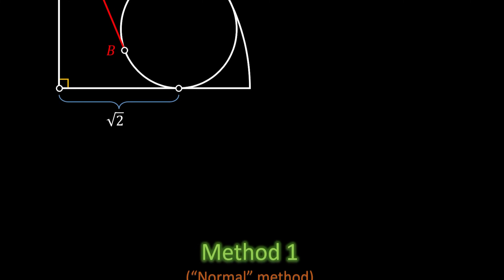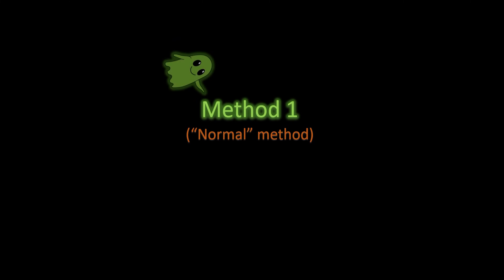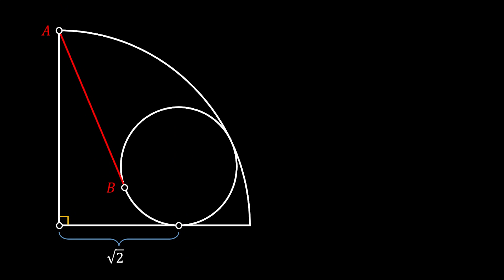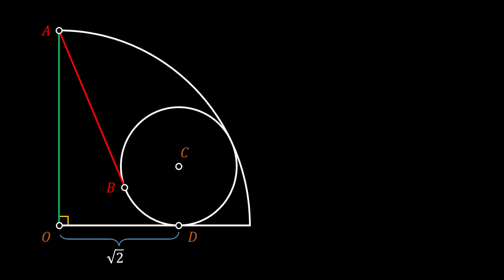Alright, so first we are going to do this using the normal method of geometry. We will label the center of our quarter circle as O and the center of our inscribed circle as C. We will also mark the bottom intersection point as D. The line OA represents the radius of our quarter circle and we will label this line as capital R.